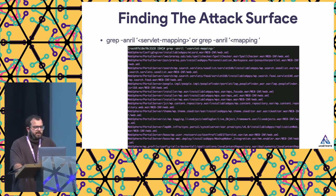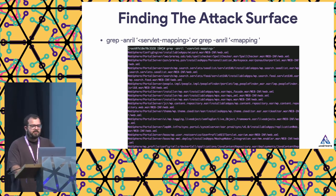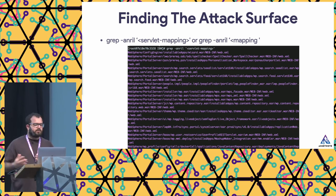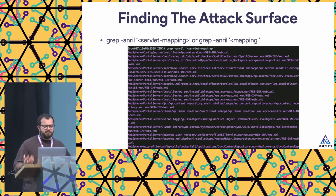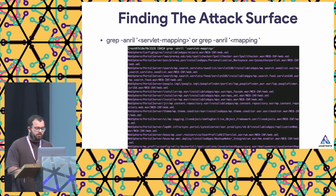The next step is understanding the attack surface — one of the most important steps. In this scenario we used a grep command to look for anything with servlet mappings. This requires some intimate knowledge about how the application works, but over time you become familiar with how different applications are deployed — whether on Tomcat, a PHP web server, or a Python application. For WebSphere, similar to Tomcat, you look at servlet mappings inside XML files to understand the attack surface. There were a lot of matches and a lot of attack surface to go through.